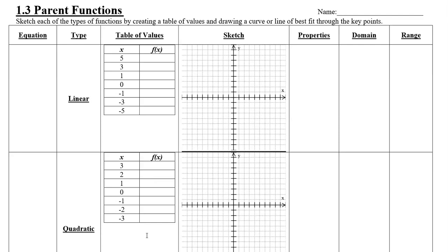Now two of them we're already very familiar with. The first one we're going to look at is a linear function. You might have seen that written in the past as y equals x, but now in function notation we can write that as f of x equals x, where f of x is on the y-axis and x is on the x-axis. Whatever x is, is what y is — so if x is 5, y is 5; if x is 3, y is 3, etc.